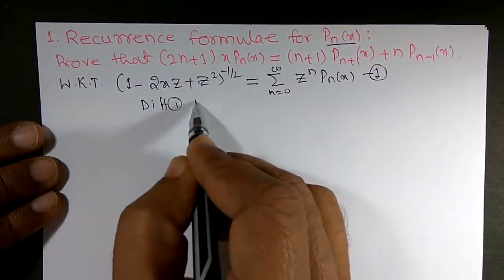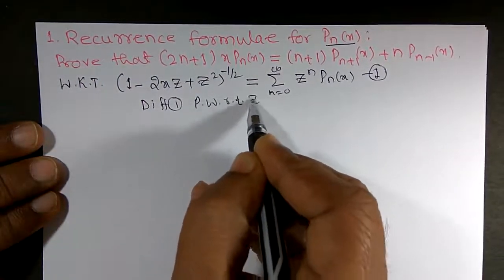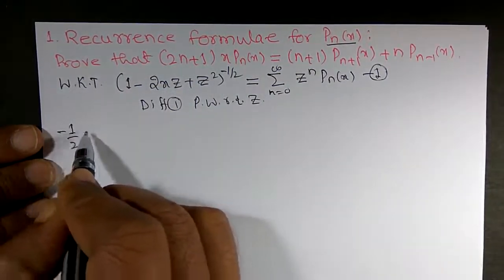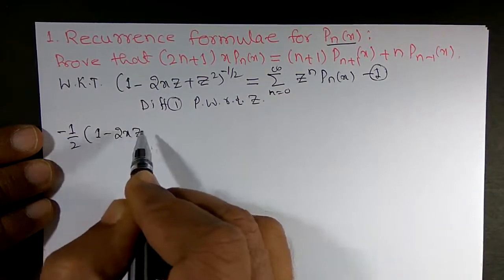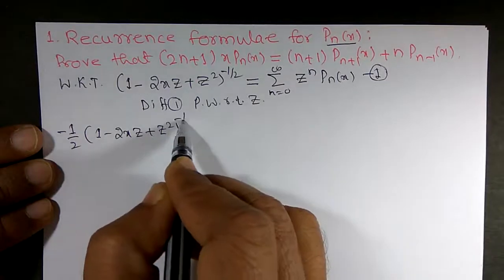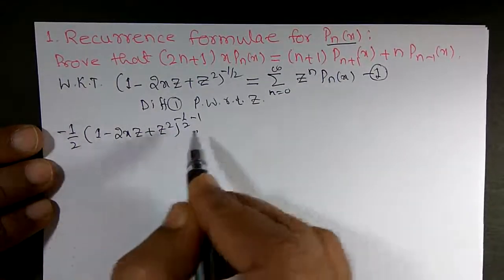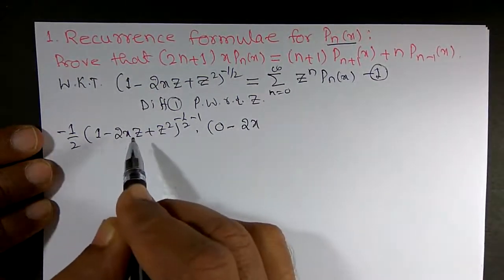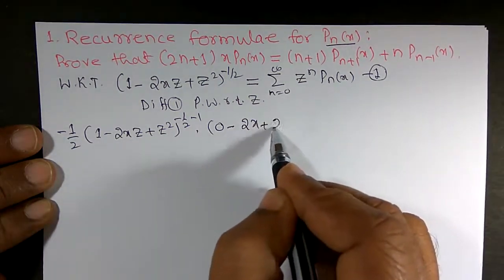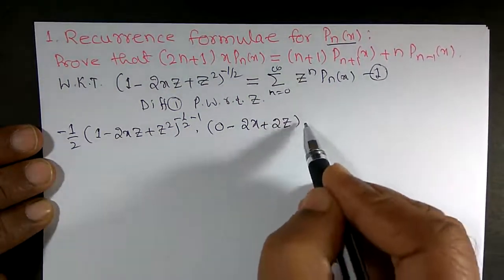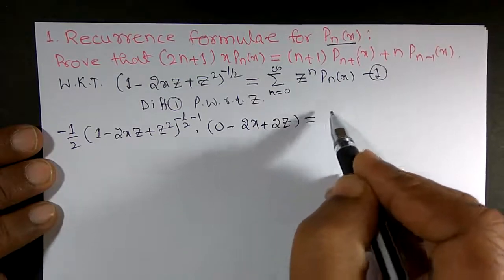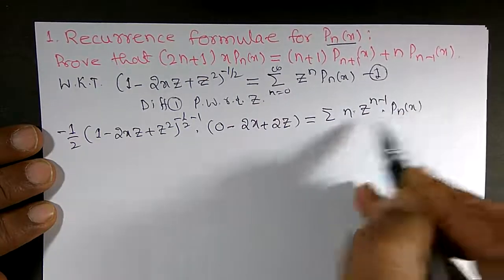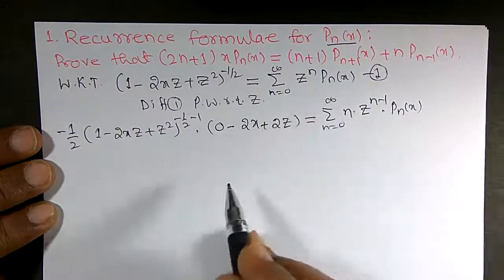Differentiate equation 1 partially with respect to z. Applying the chain rule: (−1/2)·(1 − 2xz + z²)^(−3/2) multiplied by the derivative of the inside, which gives (−2x + 2z), is equal to the summation of n·z^(n−1)·Pₙ(x) where n varies from 0 to infinity.